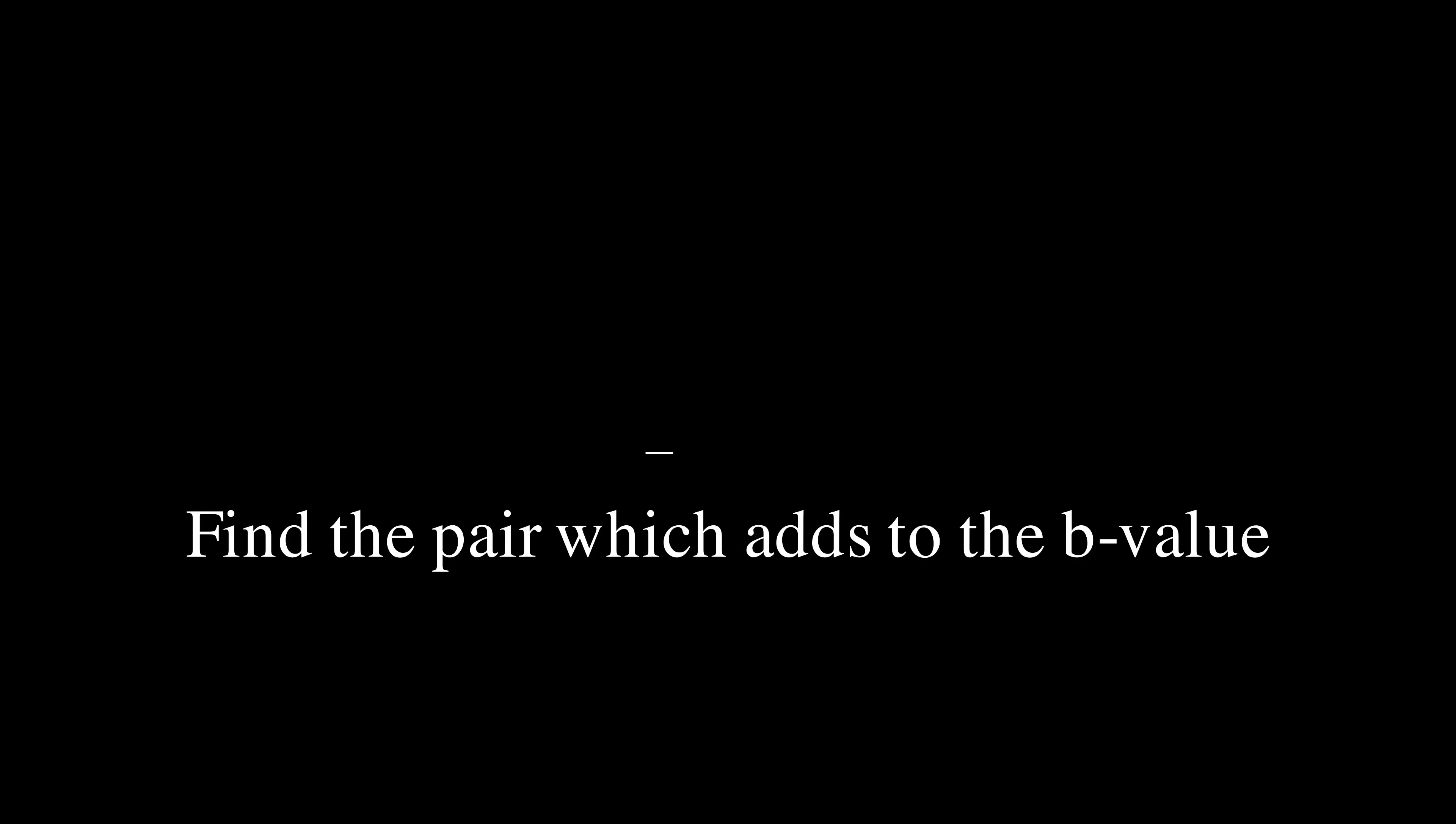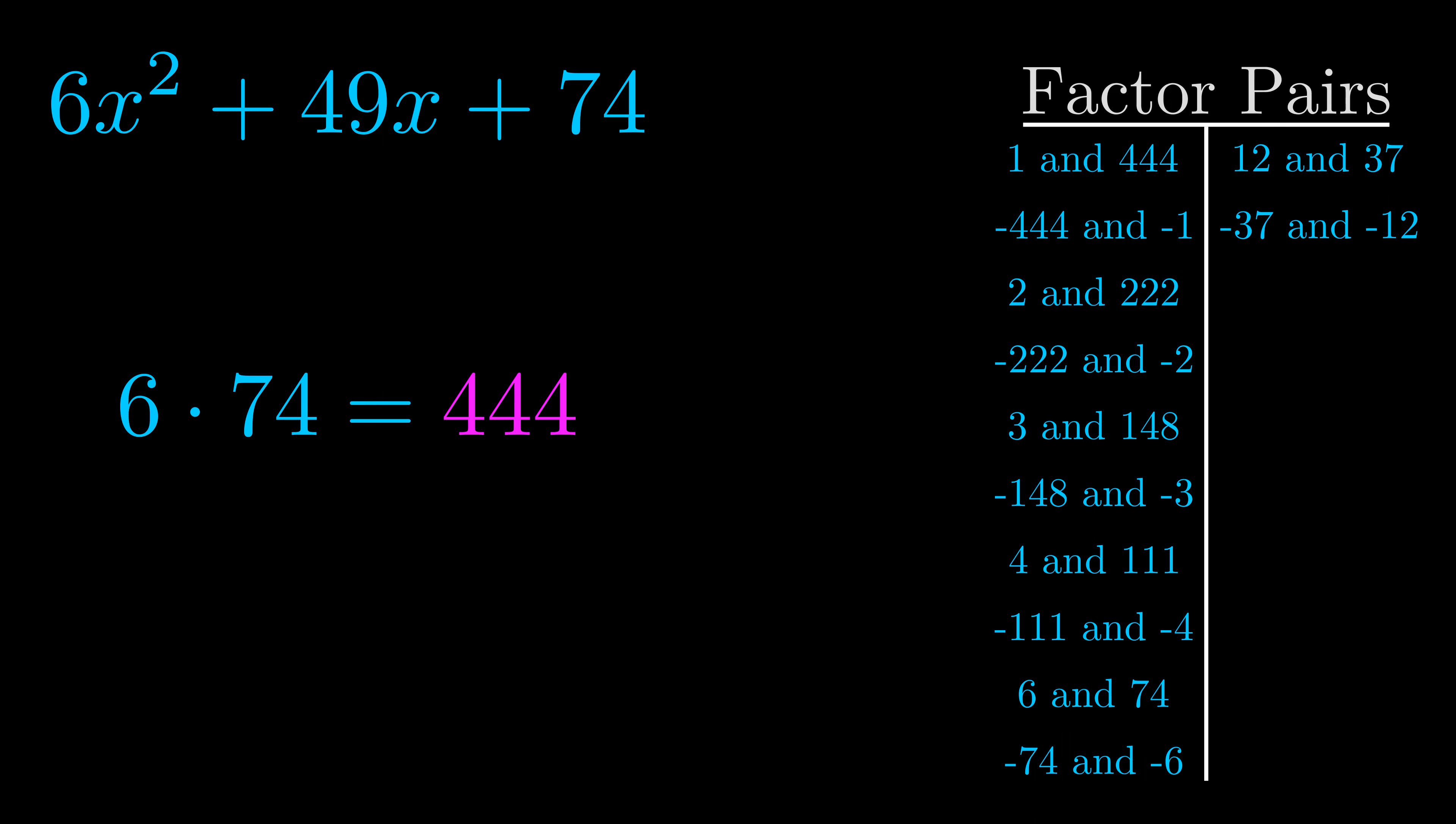The b value is the coefficient on the x term. That's the middle term, the one that we haven't done anything with yet. And really this is the only factor pair that we need.